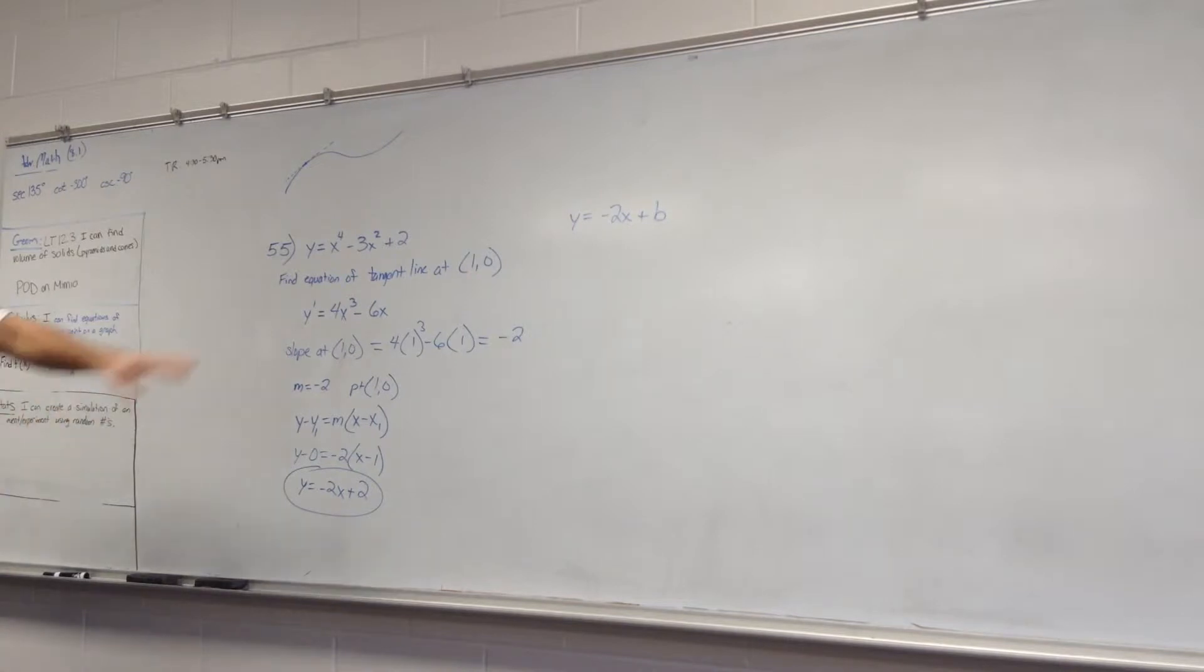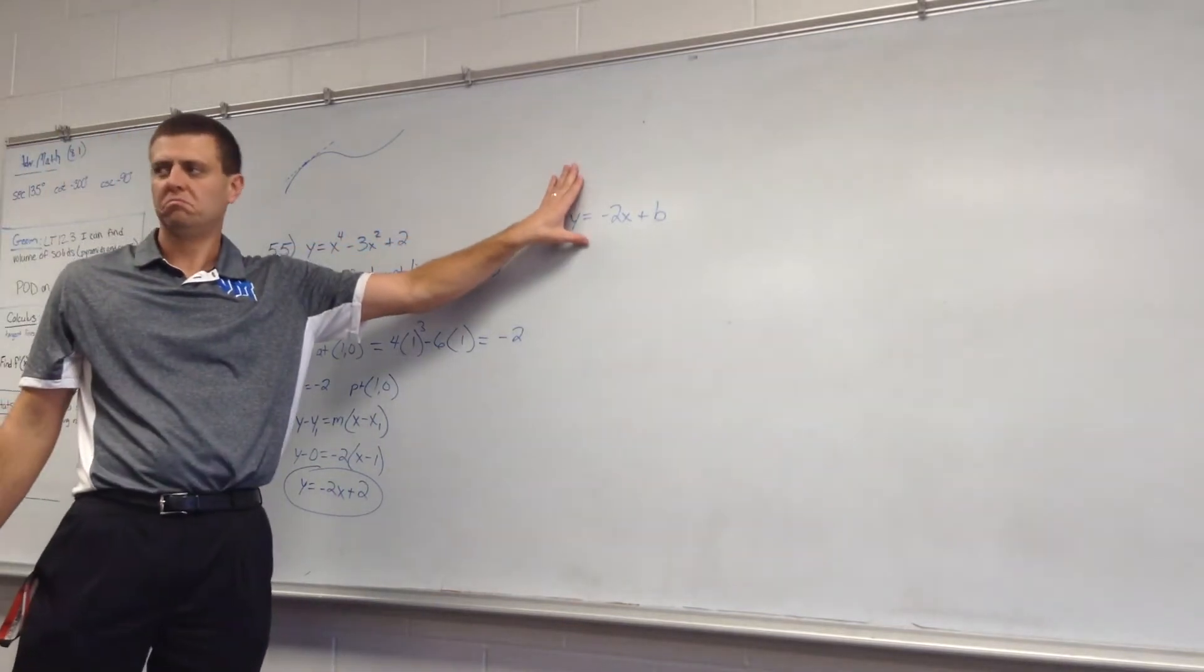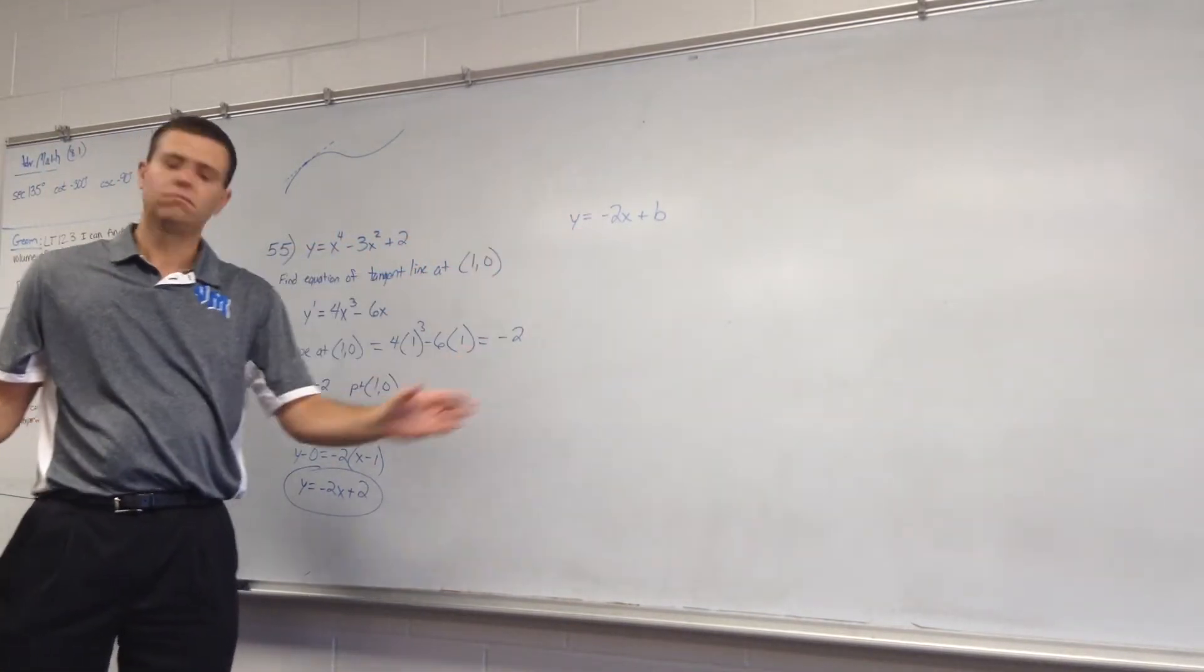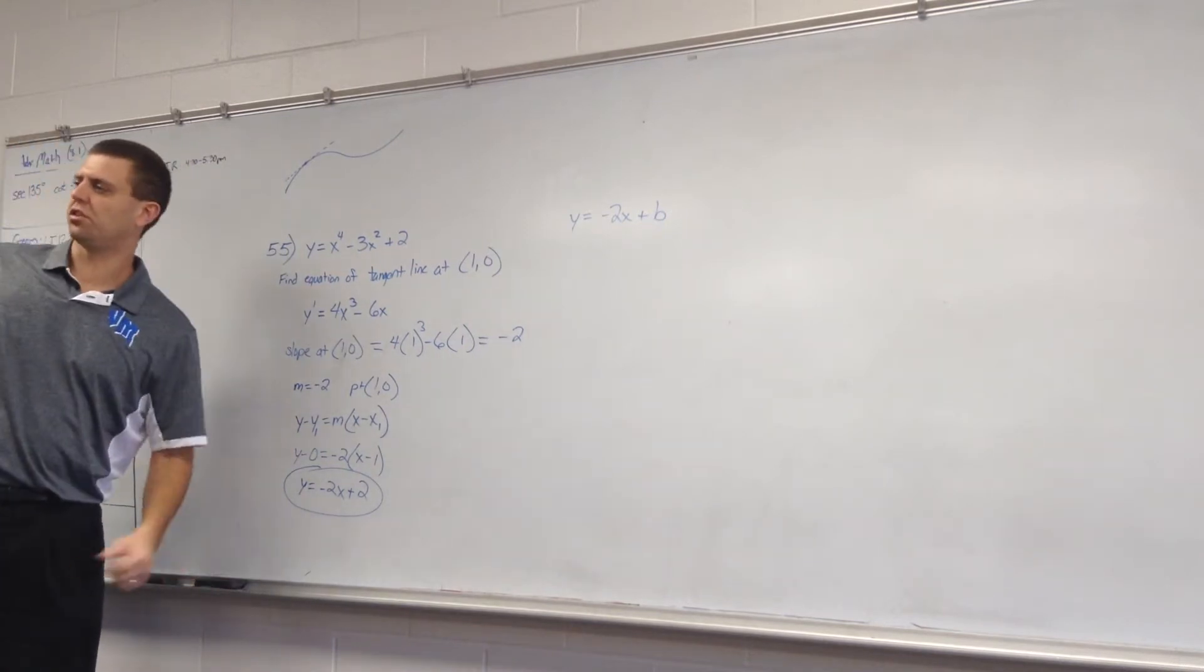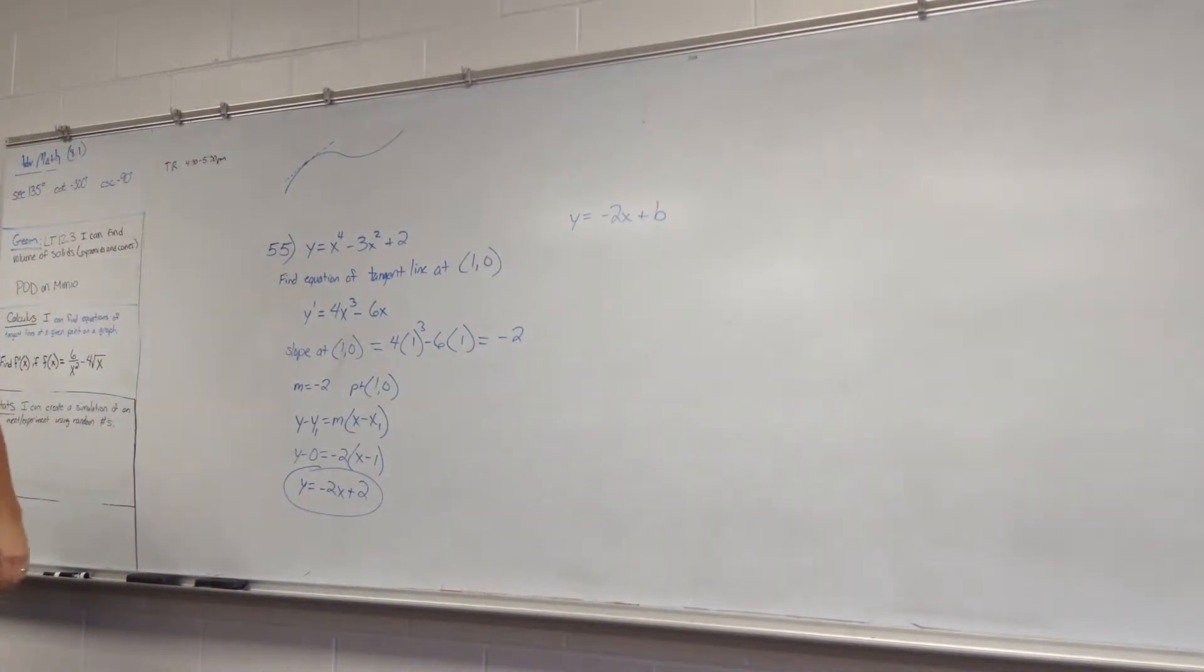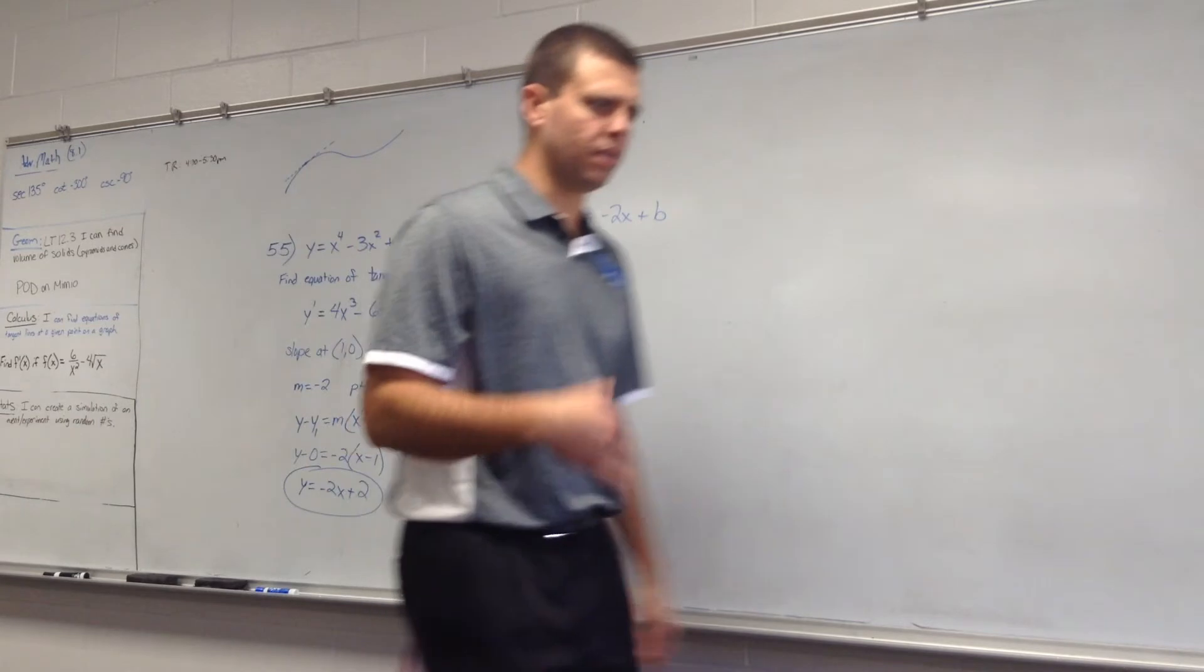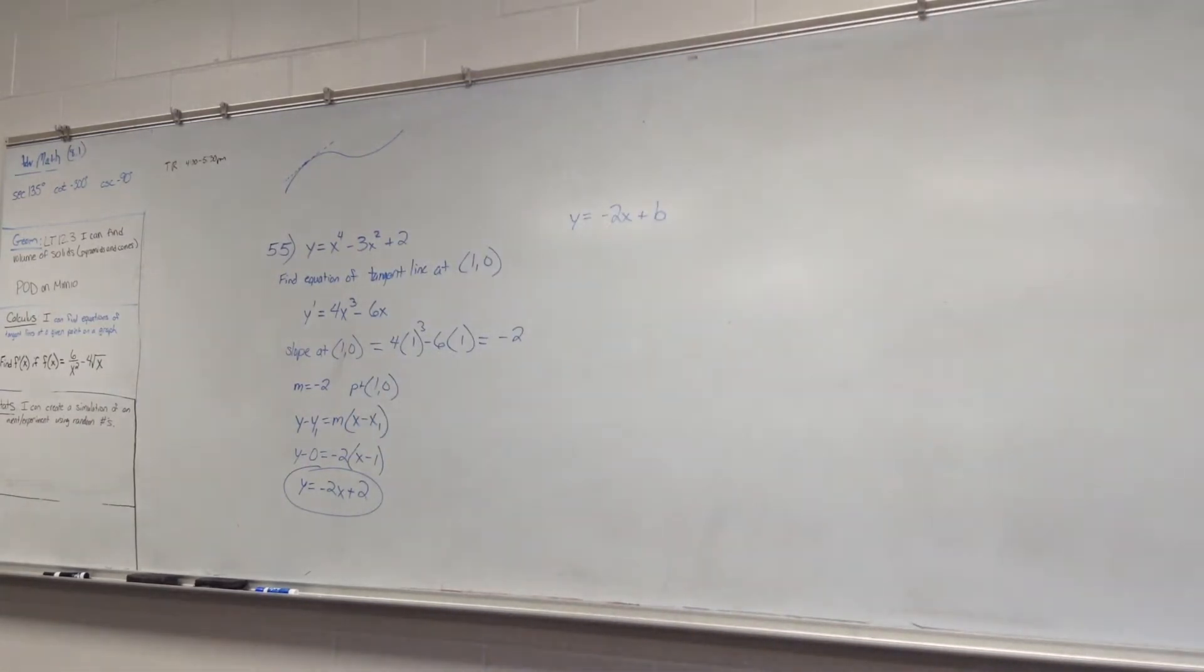So that means, if you use slope intercept from the get-go, great. If you use point slope, just change it to slope intercept. Distribute it, get y by itself. Take throwback algebra 2. Okay, yep. All right, I want to show you then the second part of that. The instructions on that problem, part A says find the equation of the tangent line. We did that.